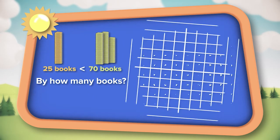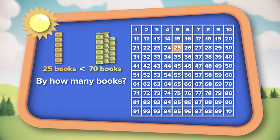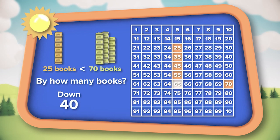If we start at 25 on our hundreds chart and ask how do I get down to 70 — let's start going down. When we move down, we're counting by tens. Start with 25 and count by tens: 35, 45, 55, 65. We moved down four times — that's 10, 20, 30, 40. Now we're down to 65, but that's not 70. So now we scoot over and go horizontal, counting by ones: one, two, three, four, five. We're at 40 plus 5. That's 45.